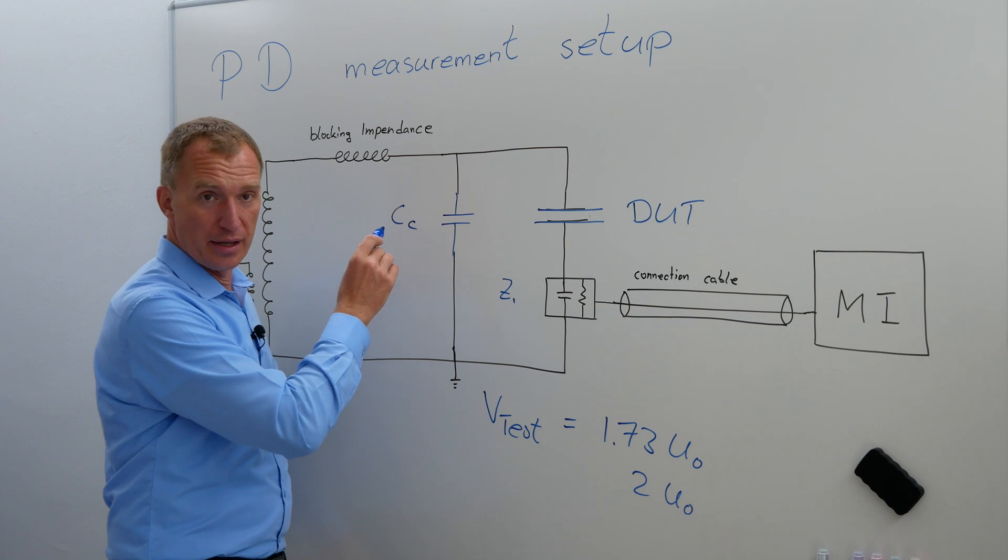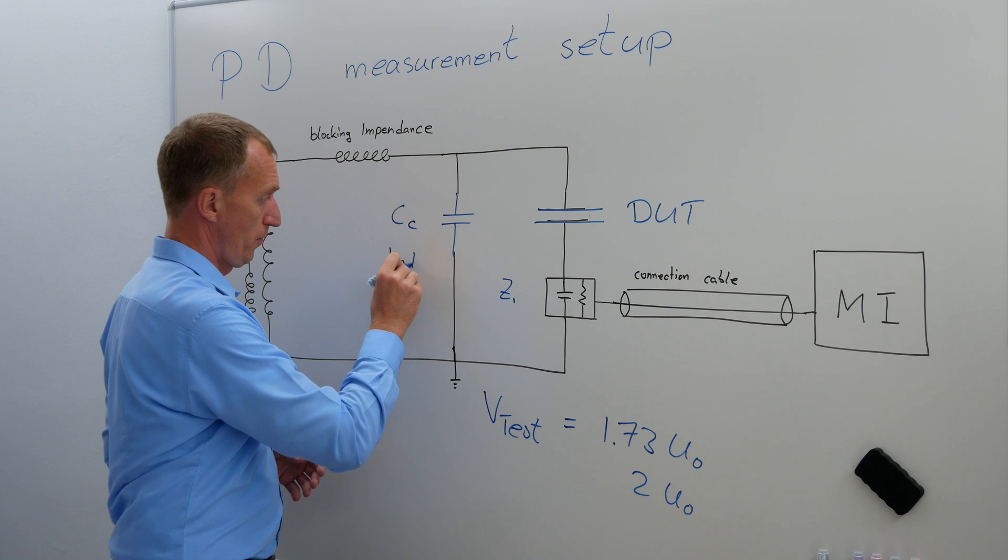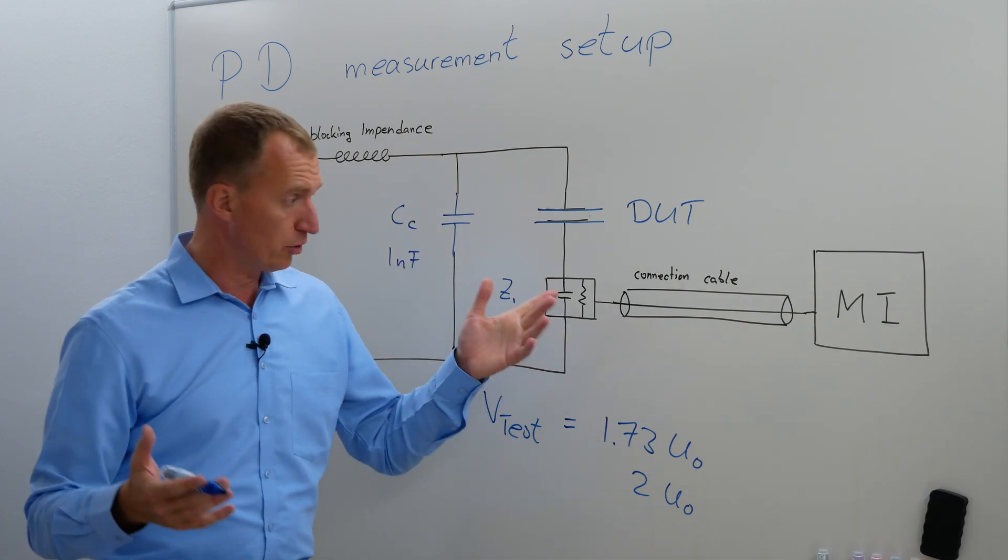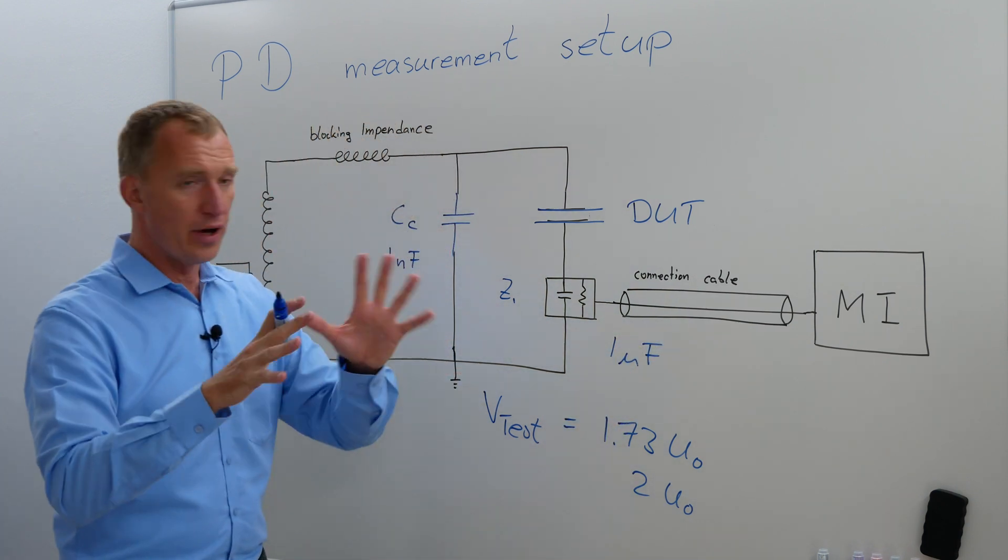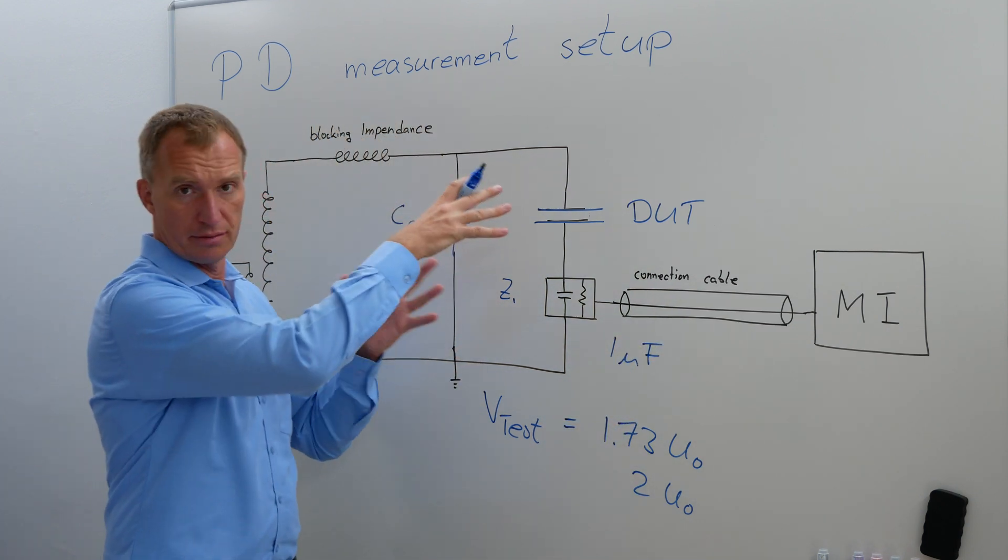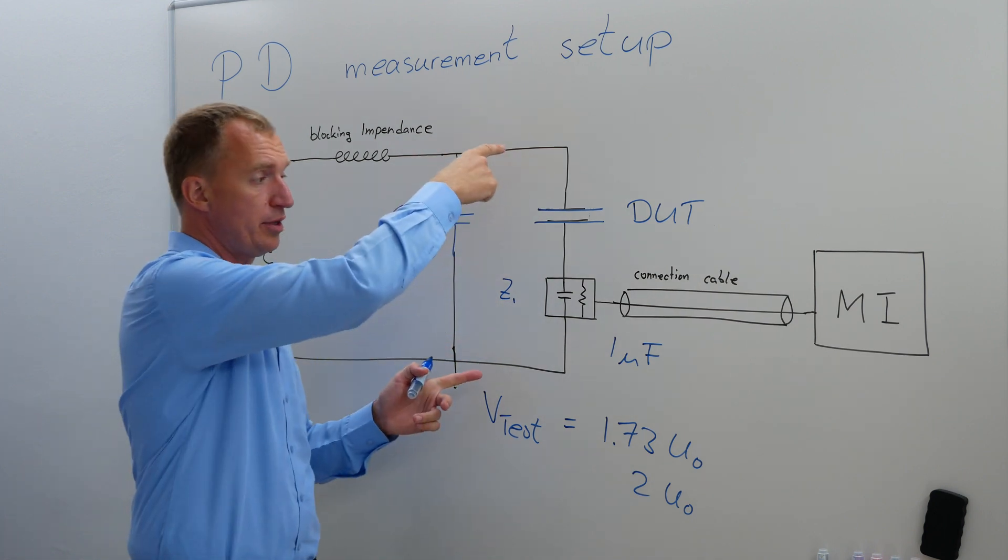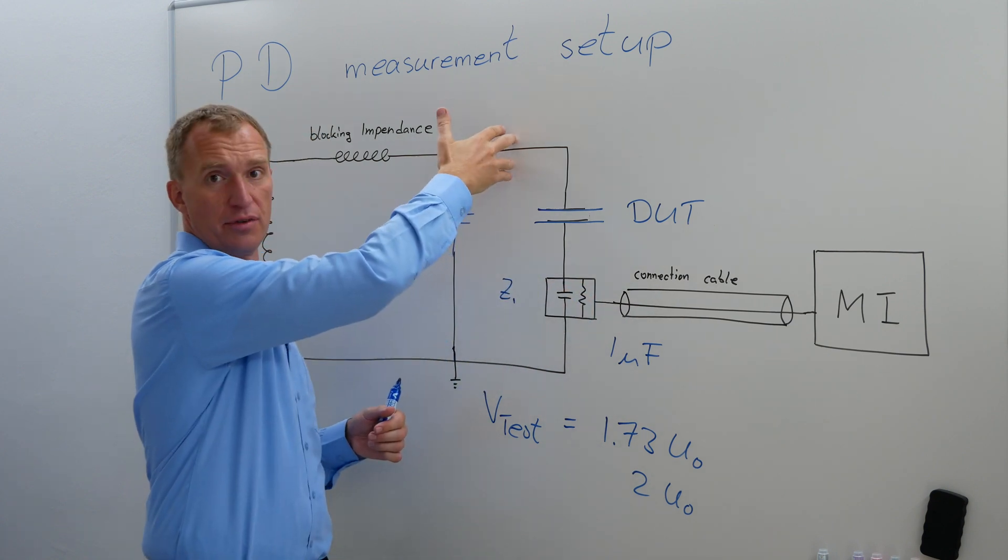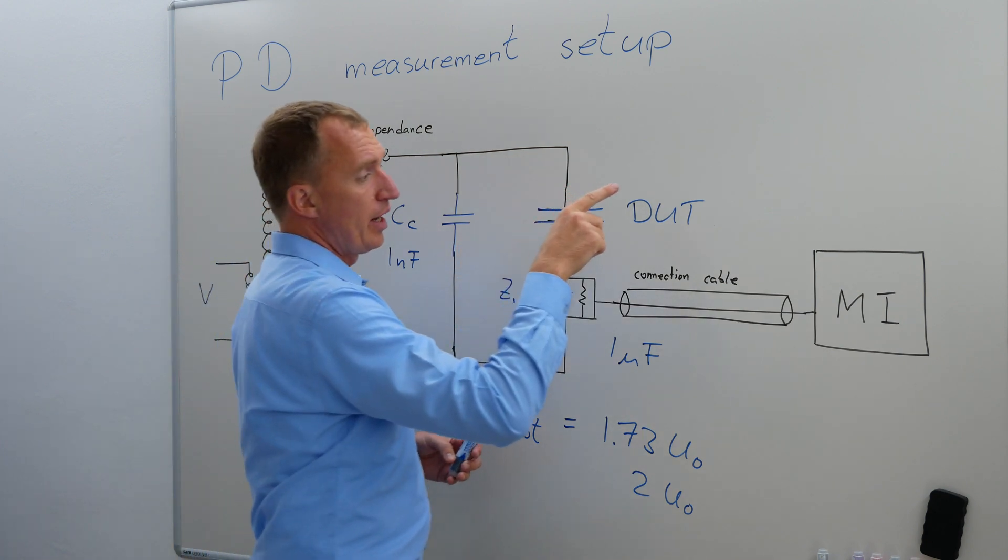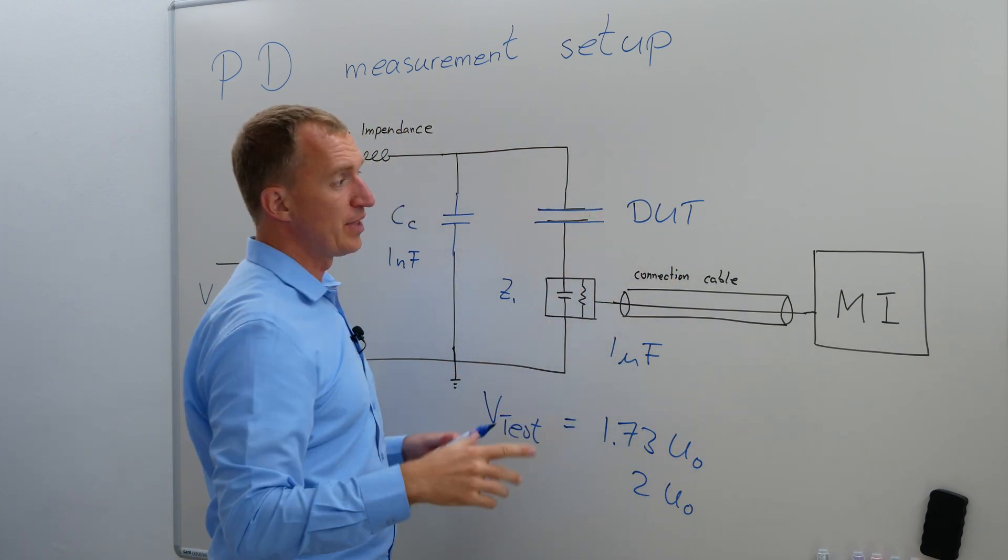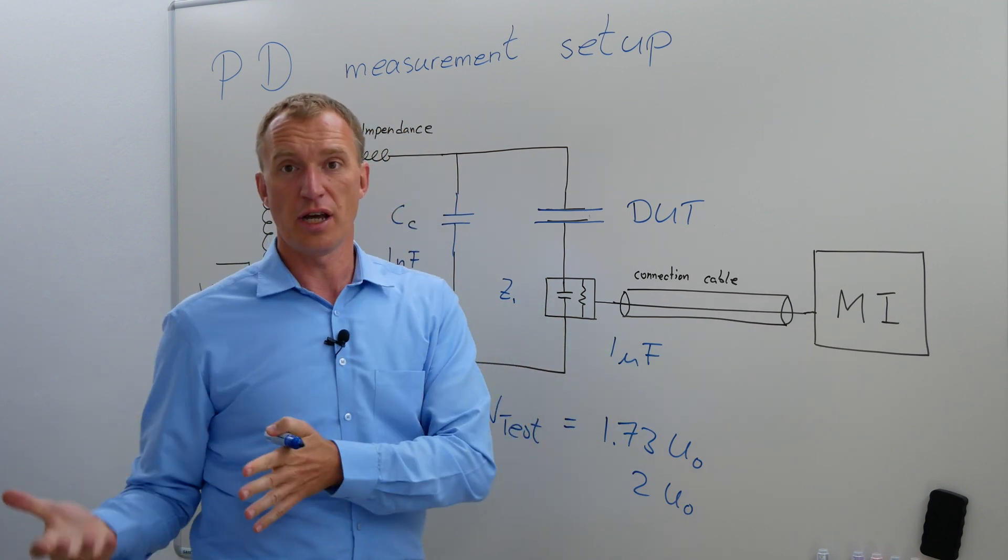If you have a known coupling capacitor, for example one nanofarad, and if your measurement impedance or quadripole has one microfarad, very roughly you had a divider which was a thousand to one, meaning you have one kV here, you have about one volt here. You have 100 kV here, you have 100 volts over there.